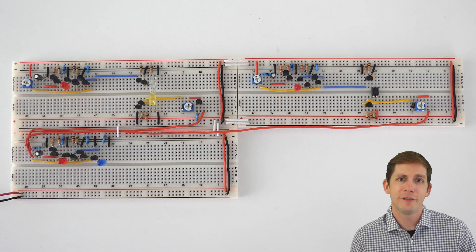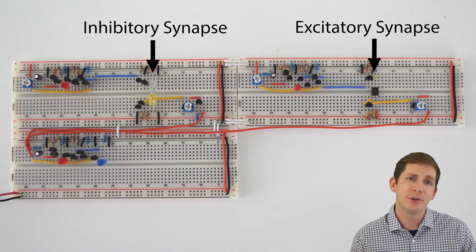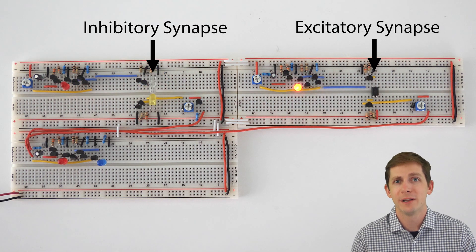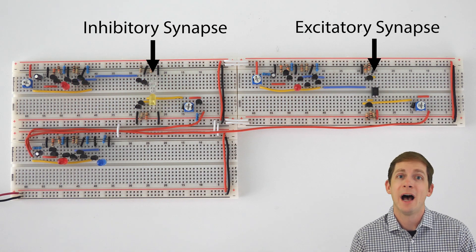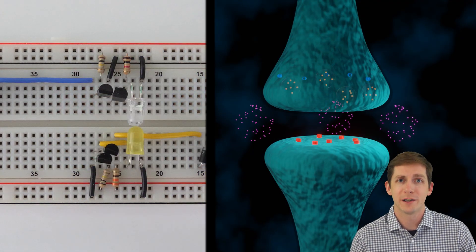Also note that when a neuron fires, it always sends out a signal. Whether the signal creates an excitatory or inhibitory response is determined by the synapse, which we talked about in the last video, which was how to build artificial synapses. That is a very important video for people to watch.